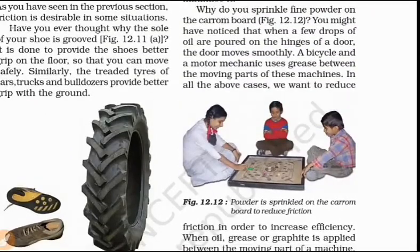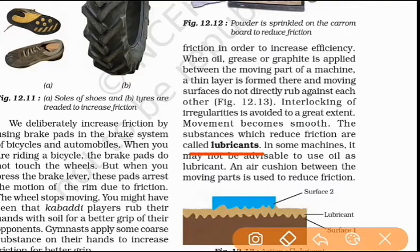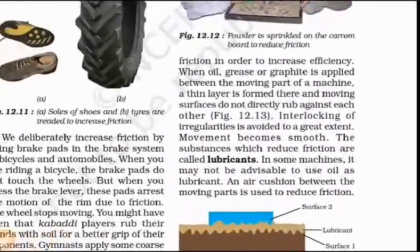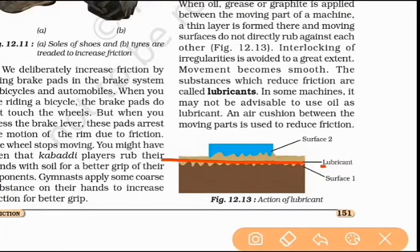Next, friction reduction. For a carrom board, we apply powder so that friction is reduced. On rough surfaces, we can change them to smooth surfaces. We also use machinery oil — what we call lubricants. Lubricants are of two types: one is fluid lubricant (oil), and the other is grease. Lubricants create a lubricant layer between surfaces and reduce friction.